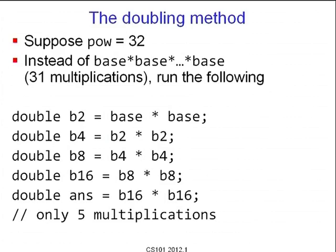There is a much more efficient way called the doubling method. Consider the special case where pow is a power of 2, say pow = 32. Instead of 31 multiplications, compute b2 = base², then b4 = b2 * b2 giving base^4, then base^8, base^16, and the answer is base^32. This costs only 5 multiplications instead of 31 — about log(32) multiplications.